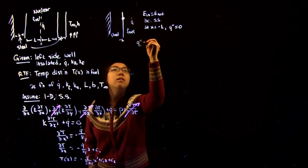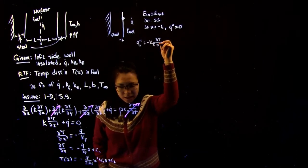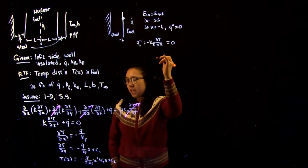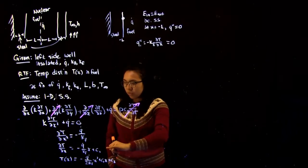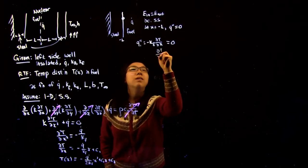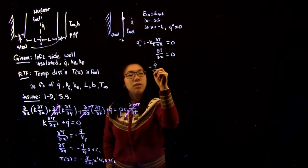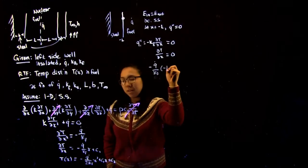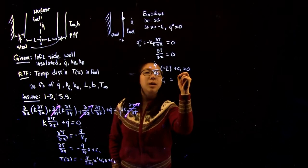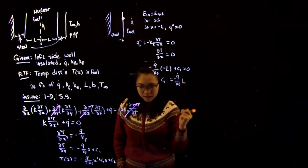Applying Fourier's law, the flux equals −k_f · dT/dx, which we've said is equal to zero. Substituting our temperature profile, we get: −(q/k_f)·(−L) + C1 = 0. This allows us to solve for C1, giving C1 = −(q/k_f)·L.